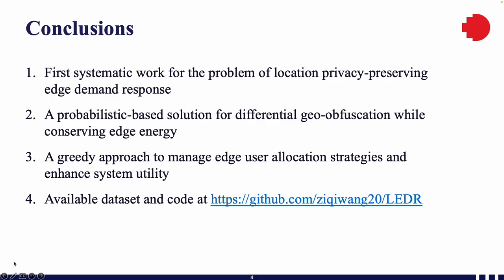In conclusion, our work is, as far as we know, the first work that studies the problem of location privacy preserving edge demand response. We proposed a probabilistic-based solution for differential geo-obfuscation while conserving edge energy, and we've also designed a greedy algorithm to manage edge user allocation strategies and enhance system utility.